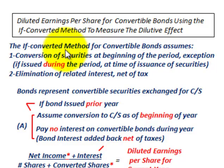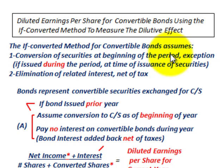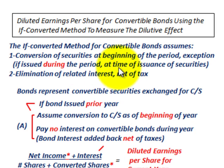Let's go through our terminology. The if-converted method for convertible bonds assumes two points. One, that the conversion of the securities occurs at the beginning of the period, with one exception: if the convertible securities are issued during the period, then the conversion is based at the time of issuance of the securities during the year.